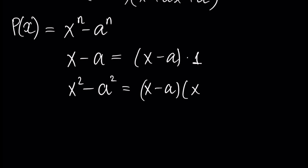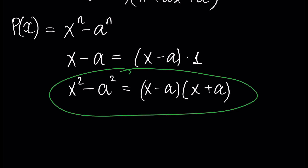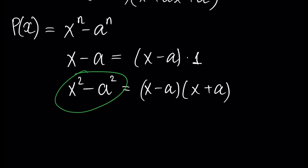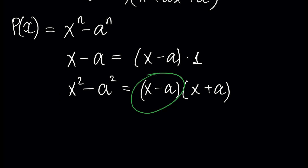...we know that x squared minus a squared can be represented as x minus a times x plus a. Therefore x squared minus a squared is divisible by x minus a, and the quotient is equal to x plus a. We already know this from previous tutorials.